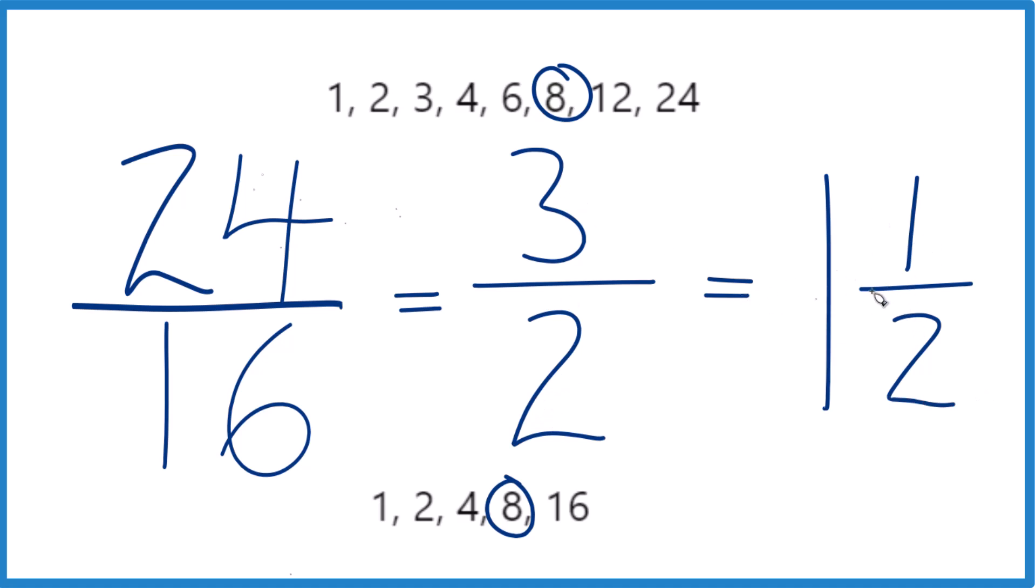They're equivalent. So that's how you simplify 24 sixteenths. We can simplify it to 3 over 2 or 1 and 1 half if we want a mixed number. It's Dr. B and thanks for watching.